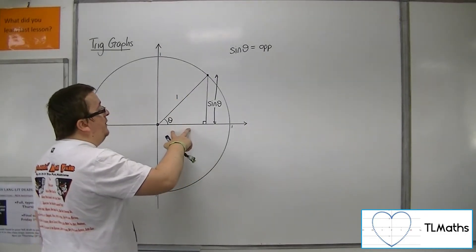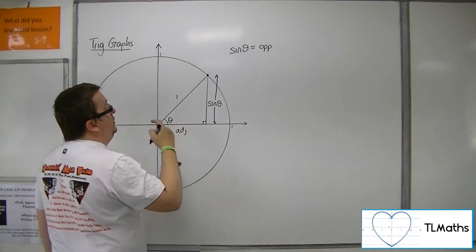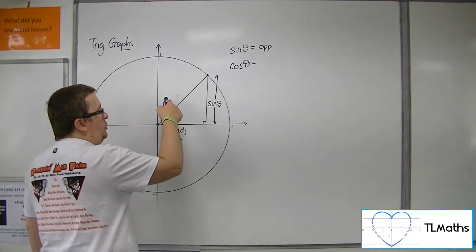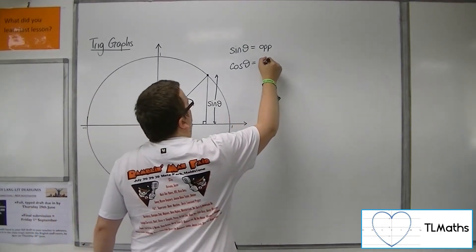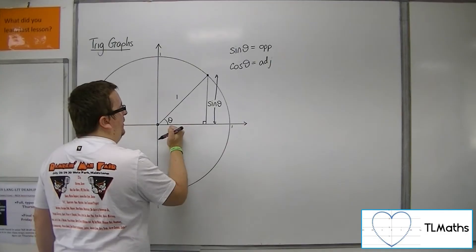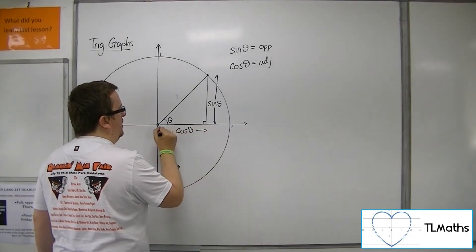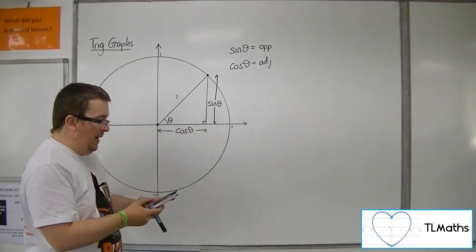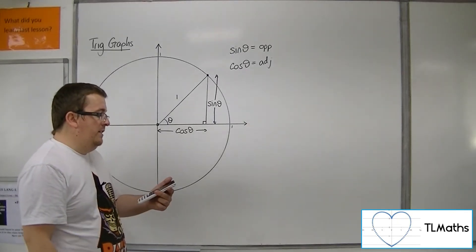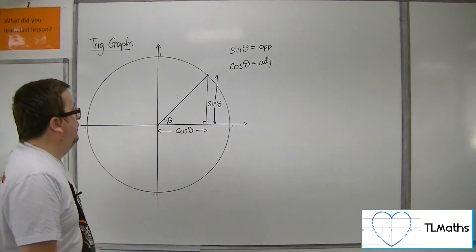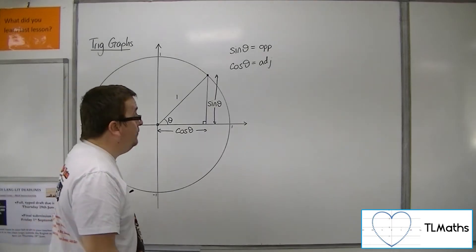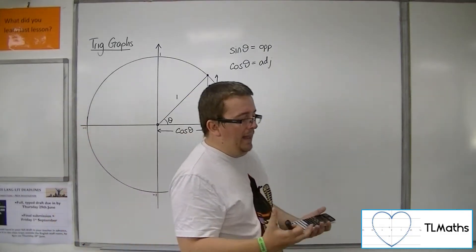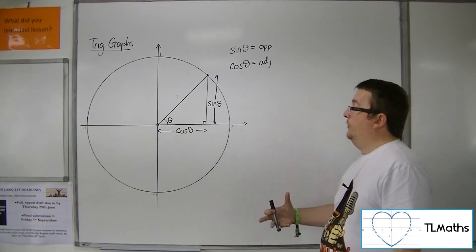This side would be the adjacent. So cos of theta equals adjacent over hypotenuse — A over H — but H is just 1, so cos theta is just the adjacent of the triangle. The base of the triangle is given by cos of the angle. So if theta was 25 degrees, the base of the triangle would be 0.9063. So this triangle has sides of length 1, cos theta, and sine theta.